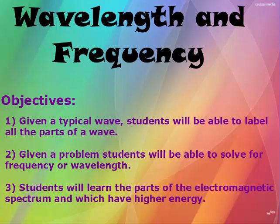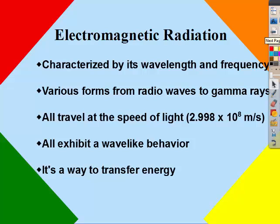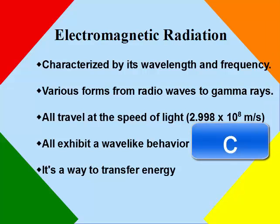Wavelength and Frequencies. Electromagnetic radiation is characterized by wavelength and frequency. It shows various forms from radio waves to gamma rays, and they are all ways to transfer energy. They all travel at the speed of light, which is 2.998 times 10 to the 8th, represented with a lowercase c. They all exhibit wave-like behaviors, so we need to learn about waves.